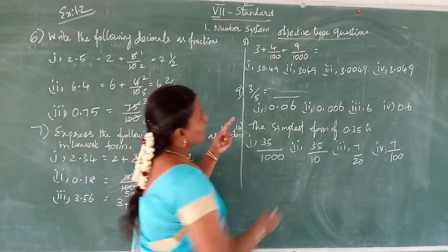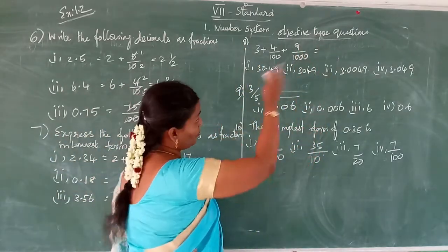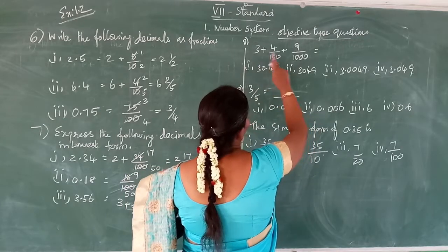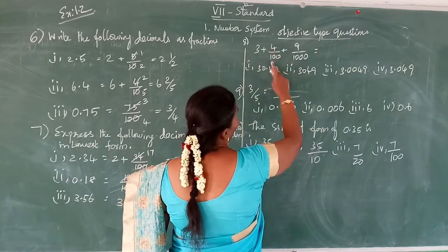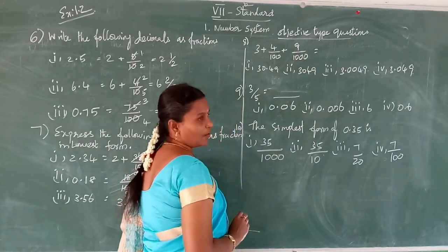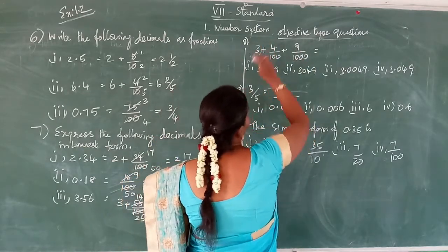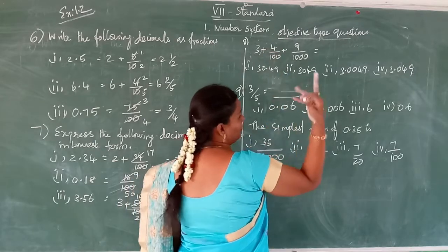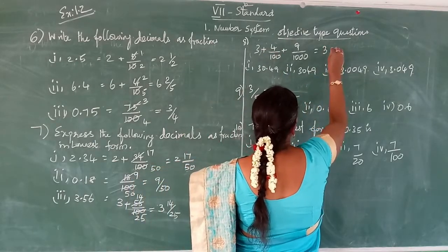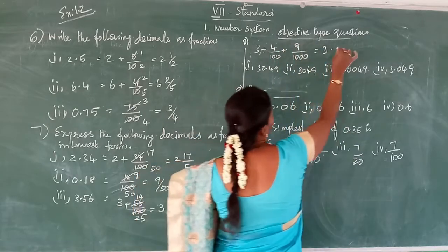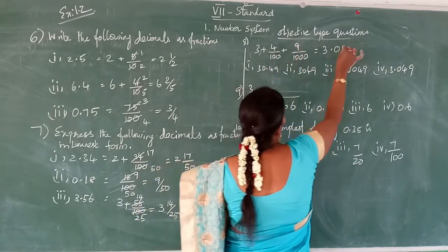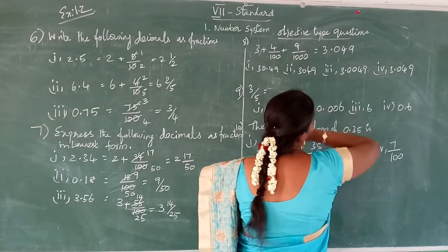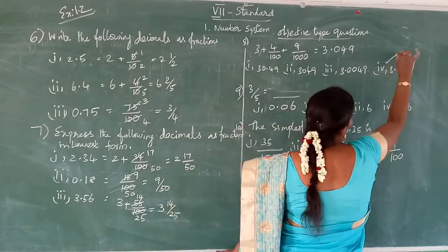Now objective type questions — the 8th, 9th, and 10th questions. See: the expanded form is 3 plus 4 by 100 plus 9 by 1000. The 3 is in the ones place. No tenths place, so 0. The hundredths place has 4 and the thousandths place has 9. So the answer is 3.049 — the fourth option is correct.